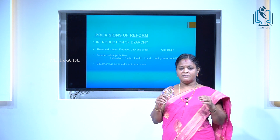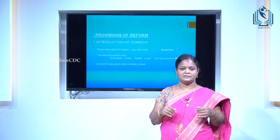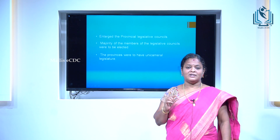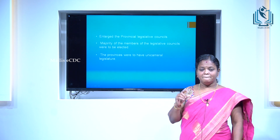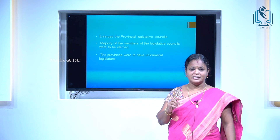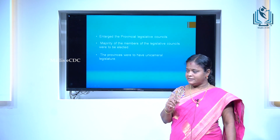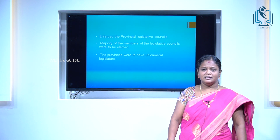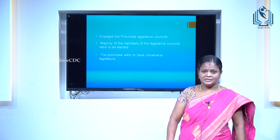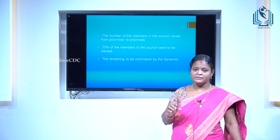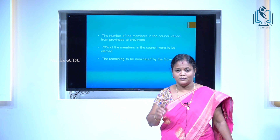However, the Governor General enjoyed extraordinary power to overrule. Another important reform was to enlarge the provincial legislative council. The majority of the members of the councils were to be elected, and the provinces were to have unicameral legislatures in nature. The number of members of the legislative councils varied from province to province.